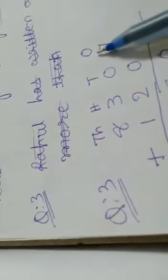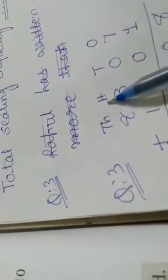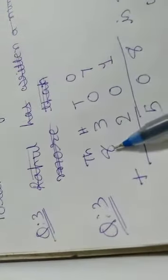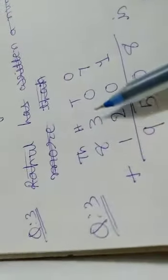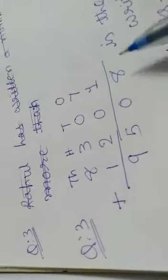First of all, we will mark the places: 1, 10, 100, and 1000. We will write the numbers 8307 plus 1201, and our answer is 9508. 9508 is the number Rahul has written.